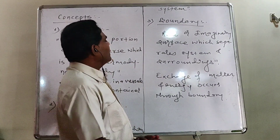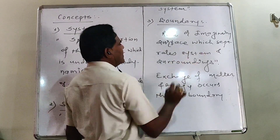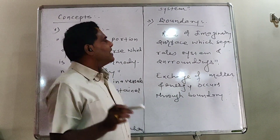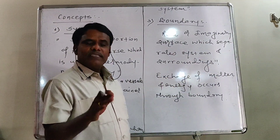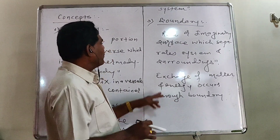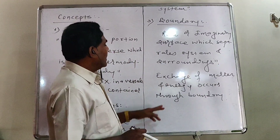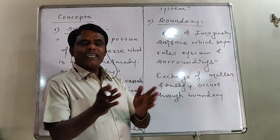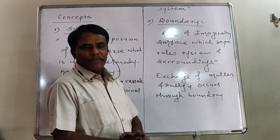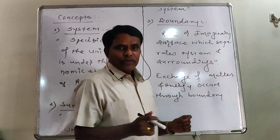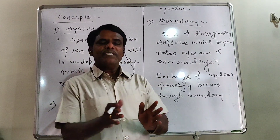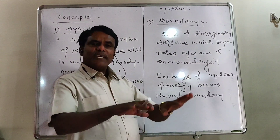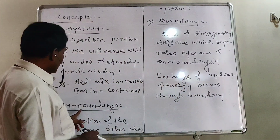Concept number three: Boundary. Boundary is the real or imaginary surface which separates the system and surroundings from one another. Exchange of matter and energy between system and surrounding occurs through the boundary. For example, if a reaction is carried out in a beaker, the reaction mixture is the system, the beaker is the boundary, and the space around it in the lab acts as the surroundings.